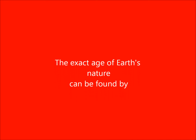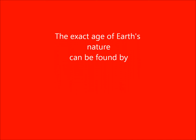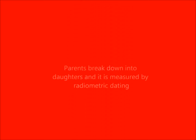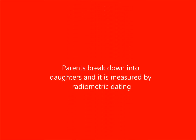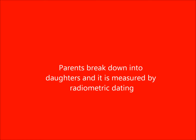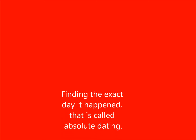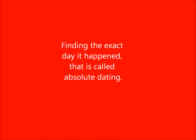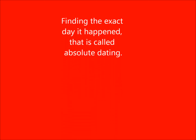The exact age of Earth's nature can be found by isotopes and half-lives. Parents break down into daughters, and it is measured by radiometric dating. Finding the exact date — that is called absolute dating.